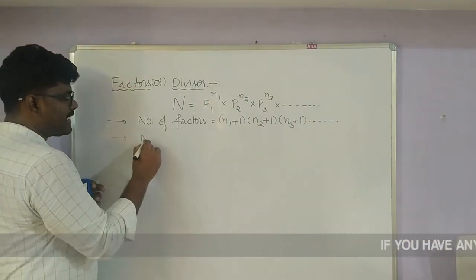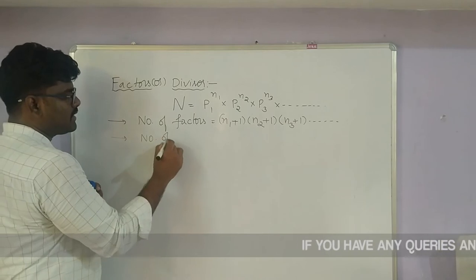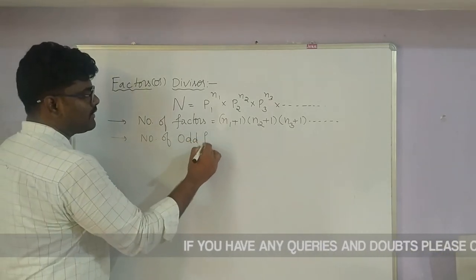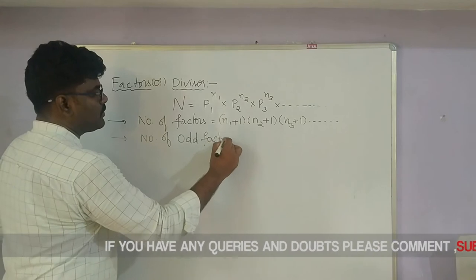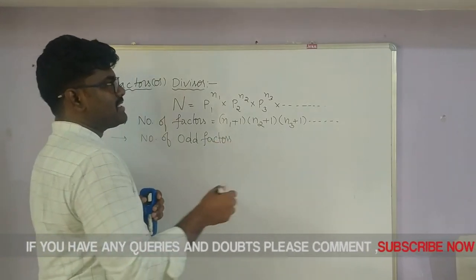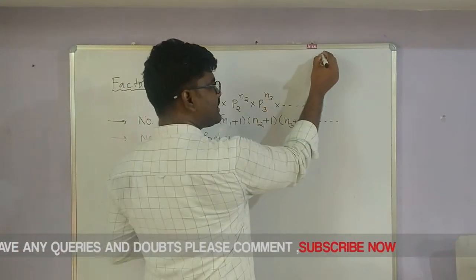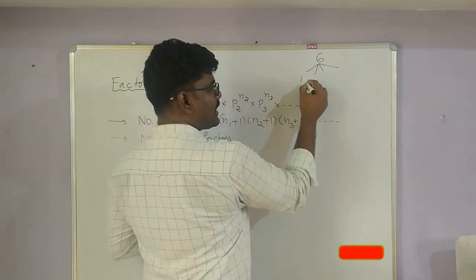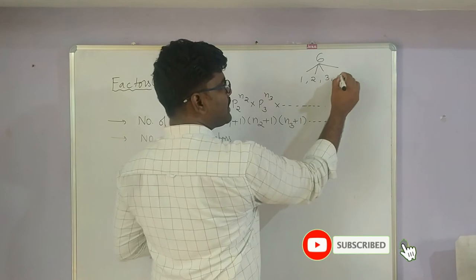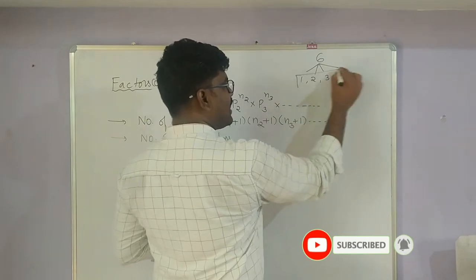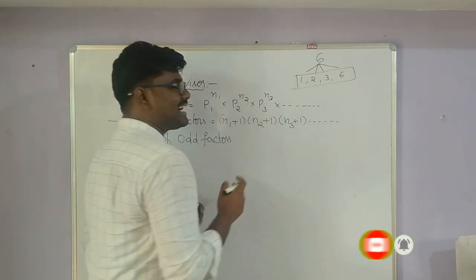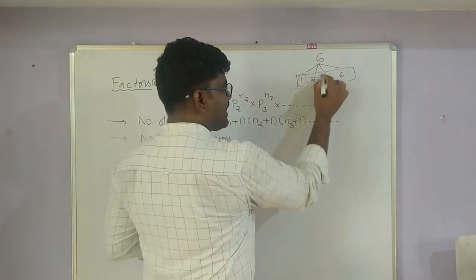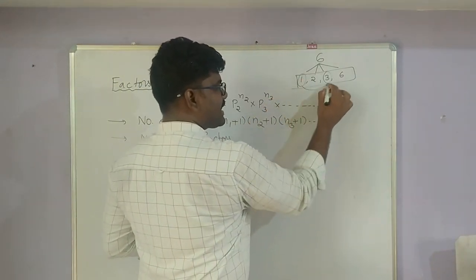Next we want to find the number of odd factors. What is the number of odd factors? Taking 6 as an example — the factors of 6 are 1, 2, 3, 6. Among those, 1 and 3 are odd, so 2 factors are odd. The remaining 2 factors (2 and 6) are even.